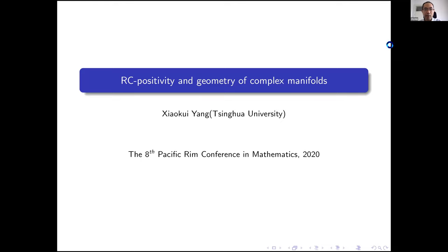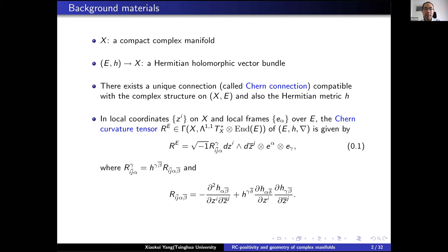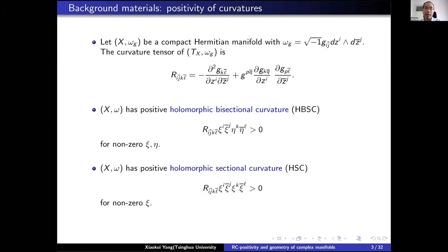Let's recall some basic stuff. Suppose X is a compact complex manifold and E is a Hermitian vector bundle. It's well known that there is a unique connection, called the Chern connection, which is compatible with the complex structure and also the Hermitian metric. We can write down the curvature using local coordinates. In the particular case of the holomorphic tangent bundle of a complex manifold, we can write down the curvature tensor in the standard way. We have many curvature notions in differential geometry and also in algebraic geometry.